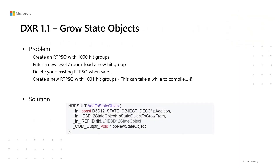Besides inline ray tracing, DXR 1.1 also allows games to grow state objects more efficiently. For example, if you have a ray tracing PSO with 1,000 hit groups and enter a new level requiring a new hit group, in DXR 1.0 you need to delete the old one and create a new one with 1,001 hit groups, which takes time to compile. With add-to-state-objects in DXR 1.1, a new state object can be made by adding shaders to an existing state object with CPU overhead proportional only to what is being added, not the overall size of the new object.